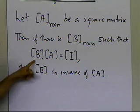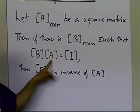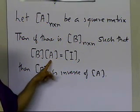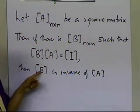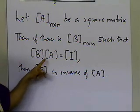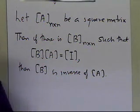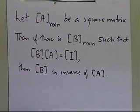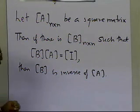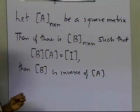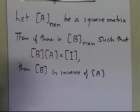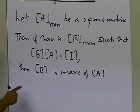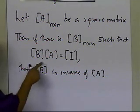Now, keep in mind that this matrix B will not always exist for a given matrix A. If somebody gives you a square matrix, it does not necessarily mean that the inverse exists. There are certain ways to identify whether a particular matrix has an inverse or not, but we're not going into those right now — we just want to get through the definition of the inverse of a matrix.